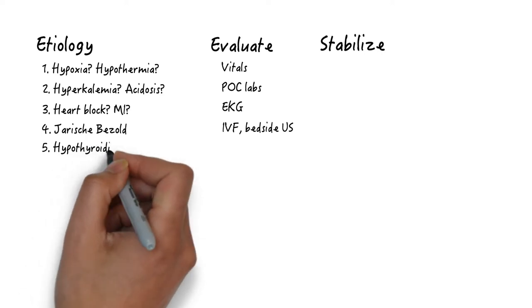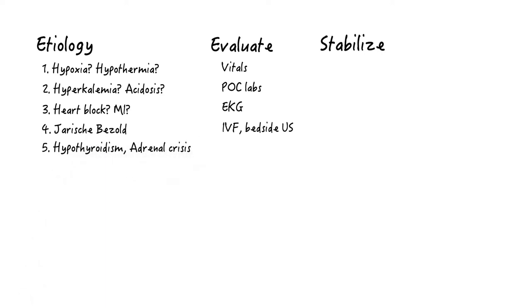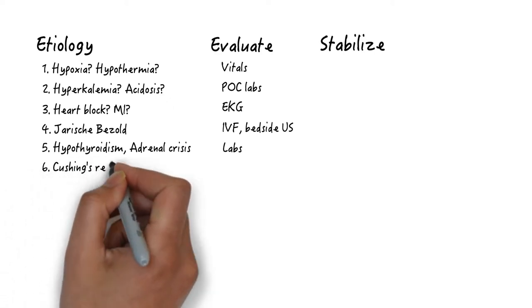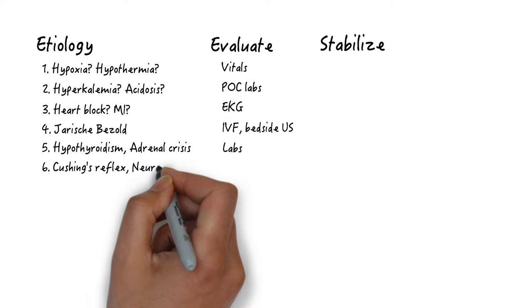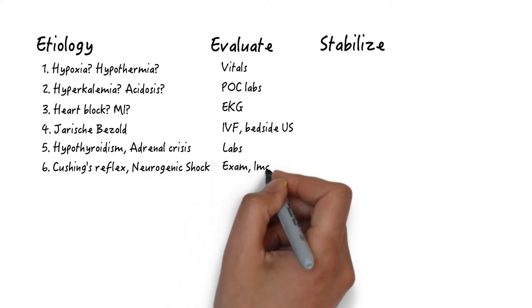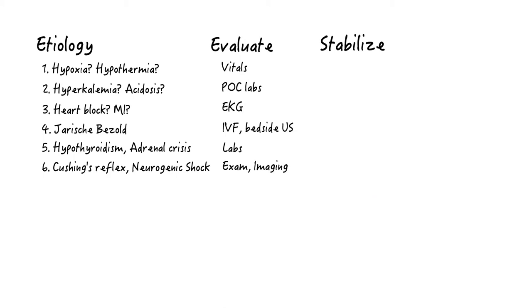There's also endocrine disorders, like hypothyroidism and Addison's. You'll have to rely on labs for this one. And there are neurological reflexes, like Cushing's reflex of the brain, though this is usually hypertensive, or a neurogenic shock from epidural abscess or trauma. Lastly, consider toxins.